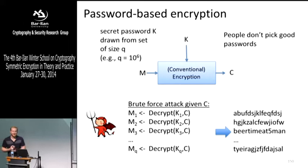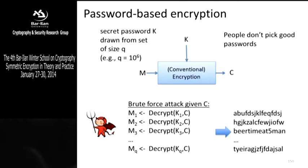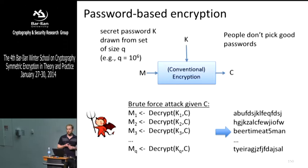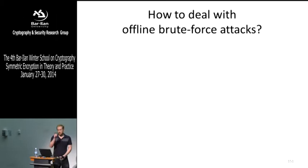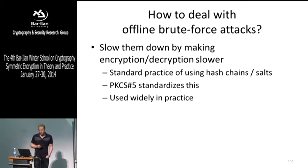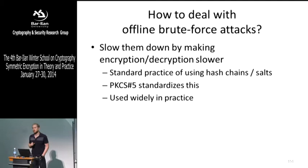Conventional PKCS number five encryption does not try to make it hard to pick out the right message. They run CBC mode using a key derived from your password and a salt that's chosen randomly. What can we do with this? The conventional approach used in practice is PKCS5, which tries to at least slow down this brute force attack as much as possible. How do you do that? Iterations.